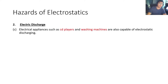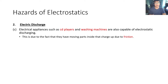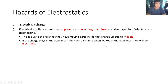Electrical appliances such as CD players and washing machines are also capable of electrostatic discharging, due to the moving parts inside them that charge up due to friction. Have you been in a situation where you touch a washing machine or a CD player and get electrocuted? That's because of electrostatic discharge. Inside these appliances there are rotating parts — the barrel in the washing machine, the CD in the CD player. Because of the rotation, there's friction, which causes charge to build up. If the charge stays in the appliance, it will discharge when you touch it. Because we are connected to the ground, the charge inside the appliance will go through us and to the ground, and you get electrified.